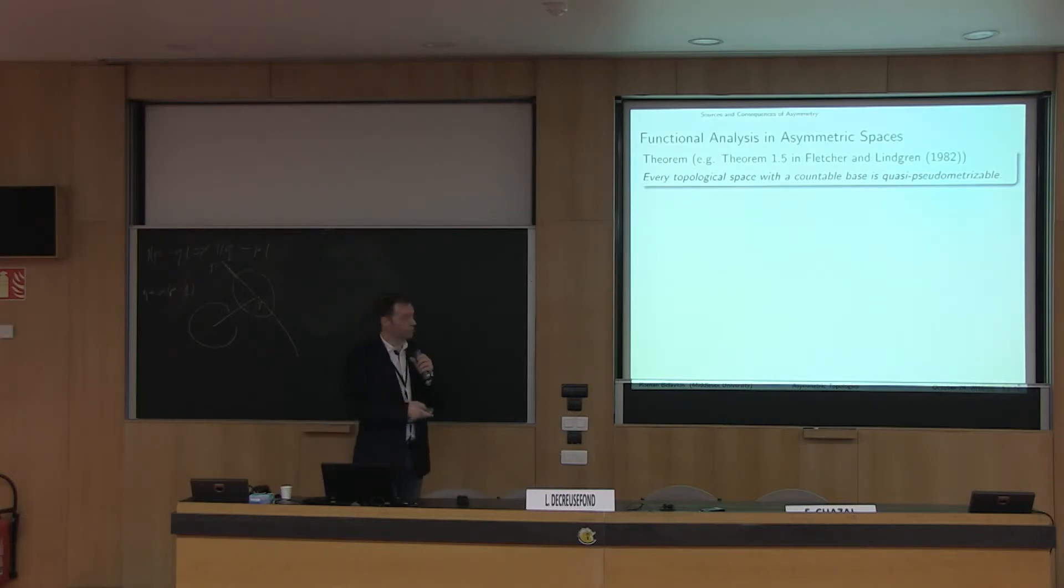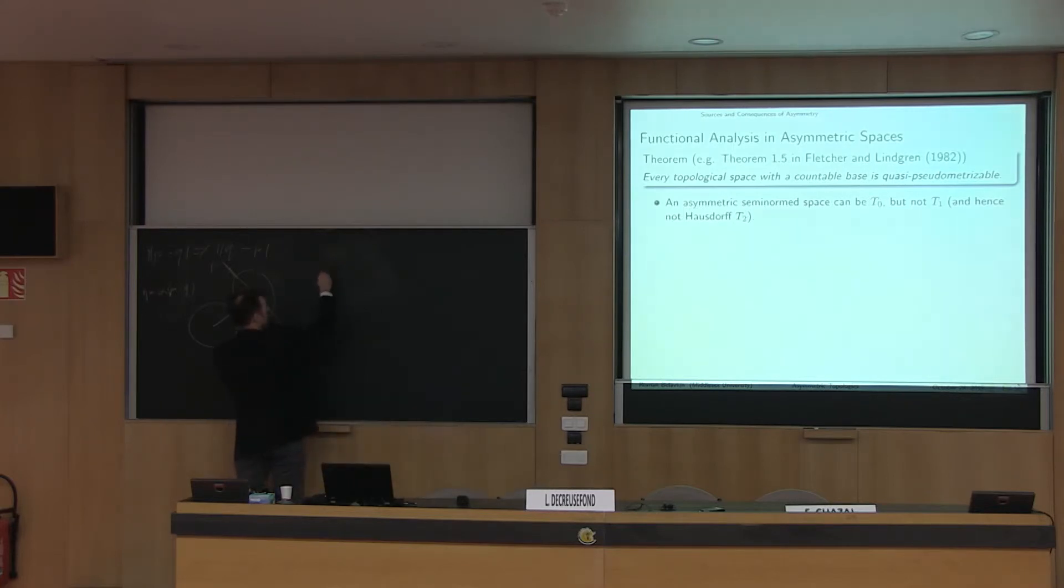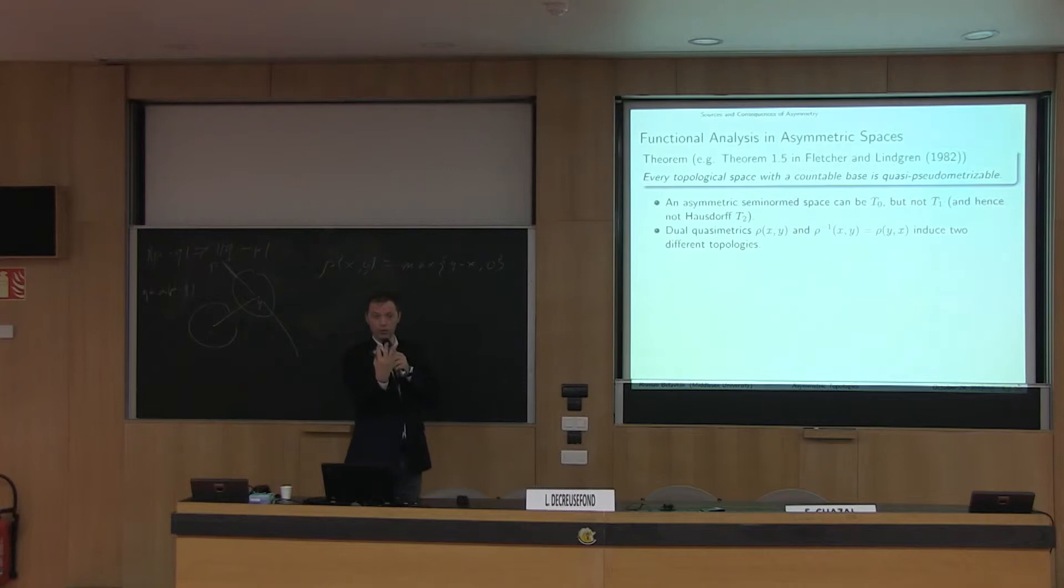First of all, it's important to realize the following: of course, Banach spaces are metric spaces. Any normed space is a metric space. But not all topological spaces are metric spaces. On the other hand, a very known theorem says that every topological space with countable base is some quasi-pseudometric space. So for any topological space with countable base, there exists a quasi-pseudometric that defines that topology. This means the class of quasi-pseudometric spaces is much, much richer than metric spaces.